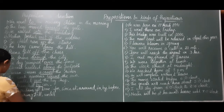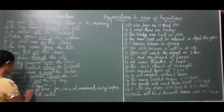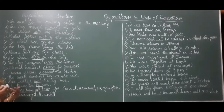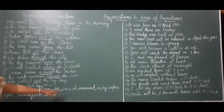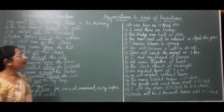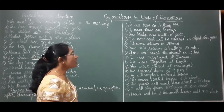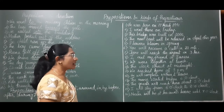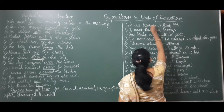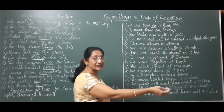Next is preposition of time. Words like for, since, at, around, in, by, before, after, during, till, until — these words denote or refer to time or duration. 'He was born on 17th March 1991' — 'on' refers to the date. 'I went there on Friday' — 'on' refers to days. 'This bridge was built in...' — 'in' refers to the year.